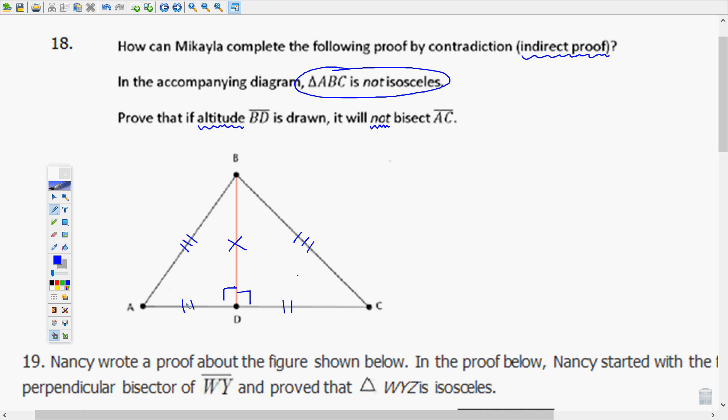Therefore triangle ADB is congruent to triangle CDB by side angle side, meaning then that side AB would be congruent to side CB by corresponding parts of congruent triangles are congruent. But this makes triangle ABC isosceles by definition, which contradicts the given statement. ABC is not isosceles. So as soon as you can contradict the given statement, you have gone far enough.